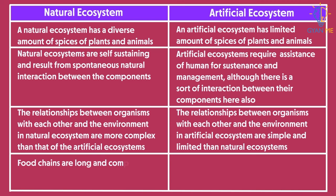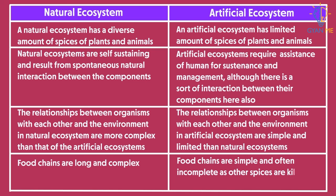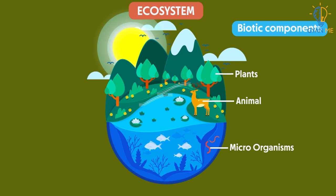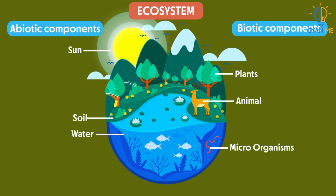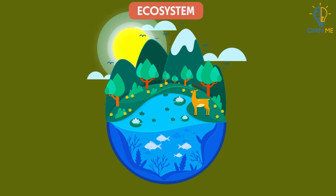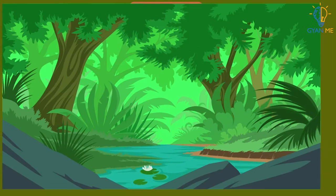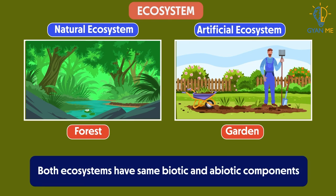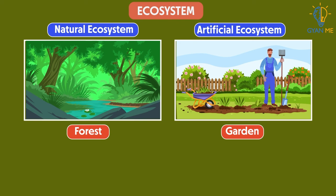Food chains are long and complex in natural ecosystems, whereas food chains are simple and often incomplete in artificial ecosystems, as other species are killed due to human interference. We will see what food chains and food webs are in our coming videos. Thus, an ecosystem forms the basic building block of an environment — a system where both biotic and abiotic components make continuous interactions with each other. Ecosystems can be broadly classified into two types: natural and artificial.